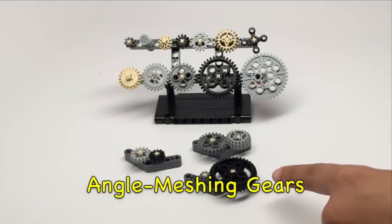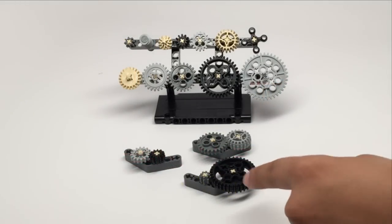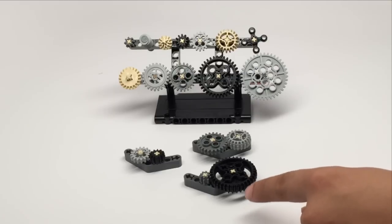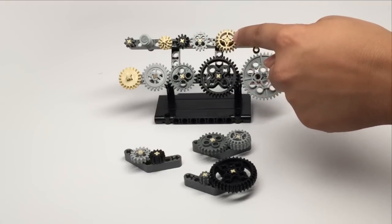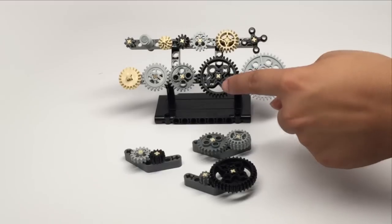These are angle meshing pieces which are characterized by looking fatter because they have these rounded teeth. The small one is 12 teeth, the medium one is 20 teeth, and the large one has 36 teeth.